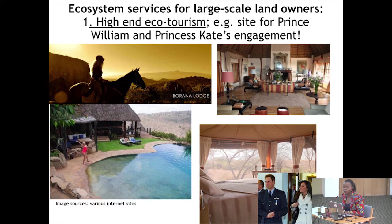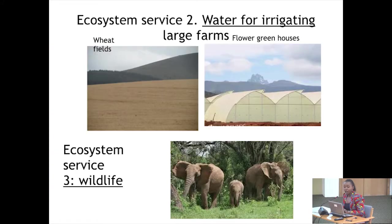The ecosystem services the forest provides — starting with large-scale farmers and conservancies: first is high-end ecotourism. This is one of the largest lodges, Borana Lodge in Borana Farm, and it was notably the site for the engagement of Prince William and Princess Kate. The other ecosystem service for large-scale farmers is water for irrigation — for wheat farming in Kisima Farm and greenhouses around Timao that depend on water from the forest. The other service is wildlife conservation, closely related to the wildlife conservancies and ecotourism.